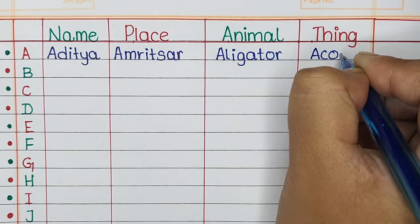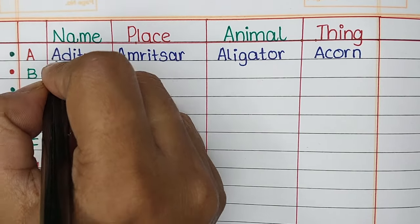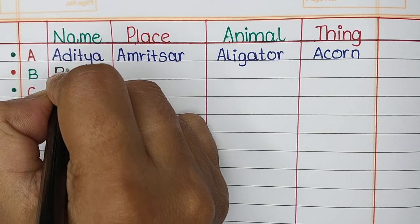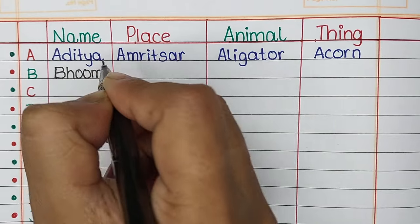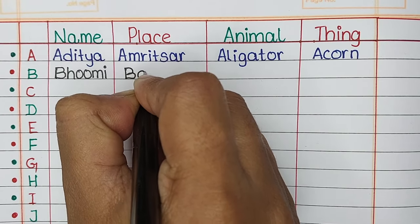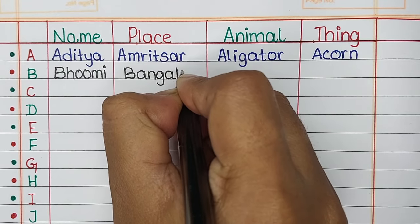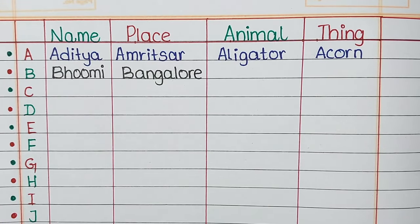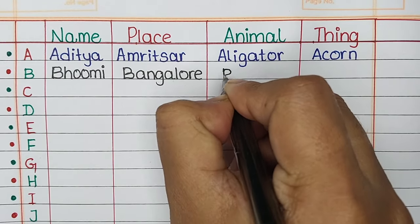And the thing is Acorn. Next is letter B. The name is Bhoomi, the place is Bangalore, the animal is Bear, and the thing is Balloon.